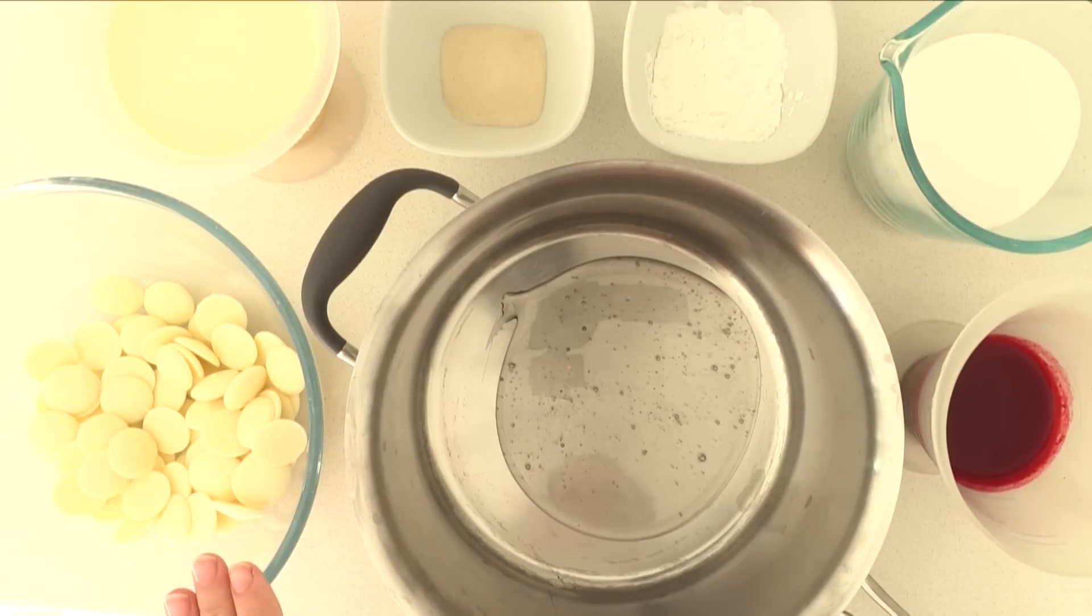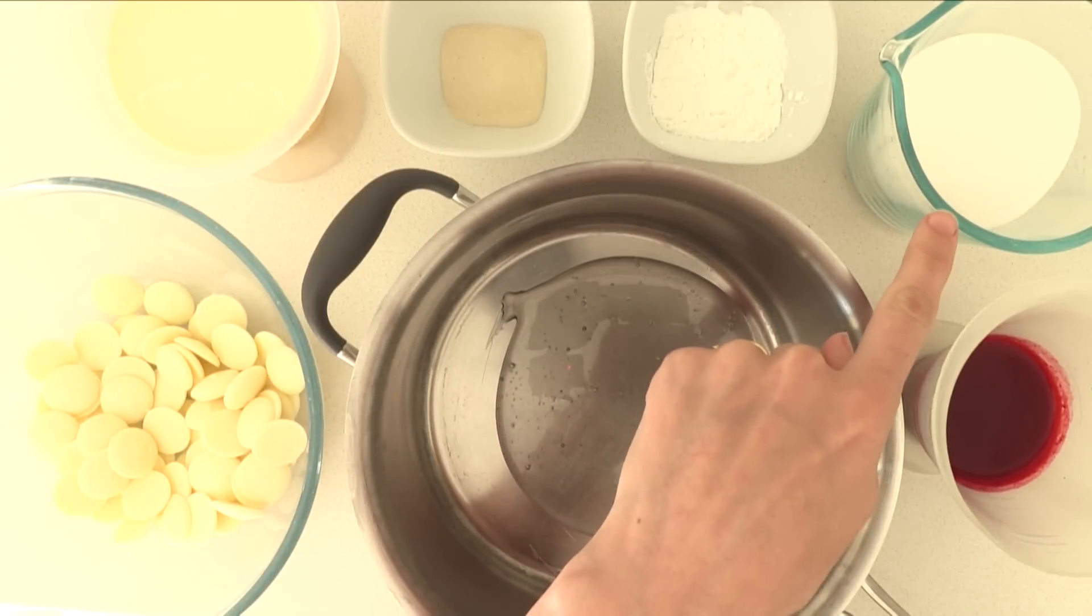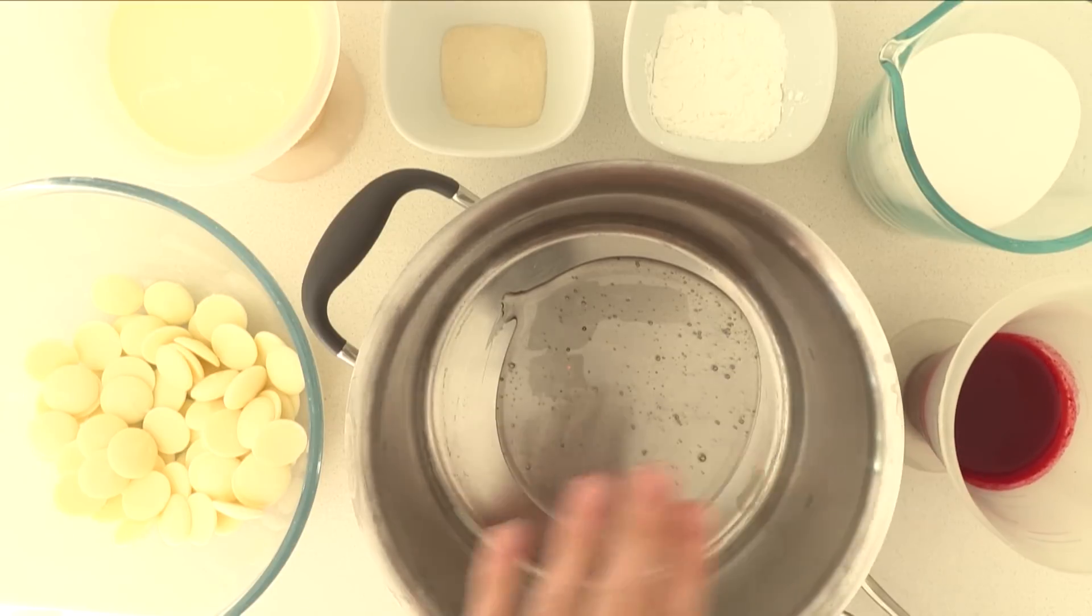To make our glaze you will need white chocolate, cream, gelatin, corn flour, sugar, raspberry puree that we made earlier and glucose syrup.